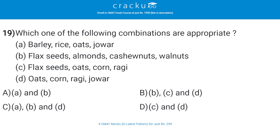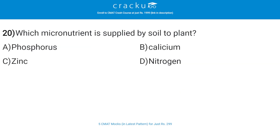Which one of the following combinations is appropriate? The correct answer is C — barley, rice, oats, and jowar; flax seeds, almonds, cashew nuts, and walnuts; and oats, corn, ragi, and jowar. Which micronutrient is supplied by soil to plants? The correct answer is C — zinc. The soil supplies large amounts of nitrogen, phosphorus, potassium, calcium, magnesium, and sulfur — these are macronutrients — and also supplies iron, manganese, copper, zinc, chlorine, and cobalt as micronutrients.